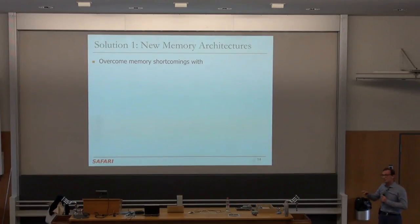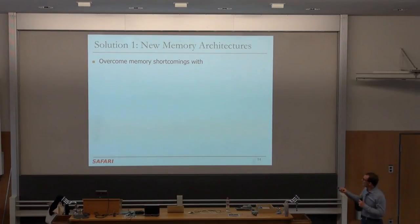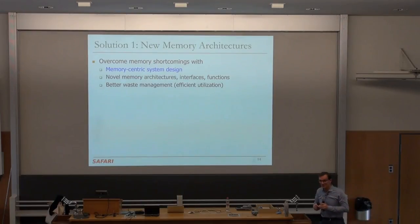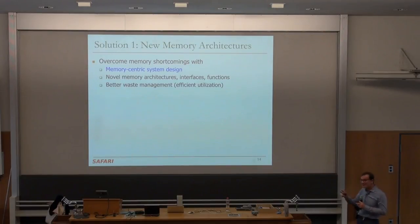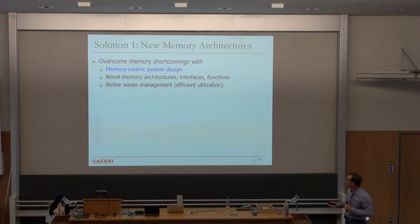Let's take a look at these different solution directions with some broad strokes, and then we'll go into the fundamentals. It's good to have this high-level perspective first before we study the basics. So what is this first solution direction? Basically, this is fixing it — how do we fix the memory? We would like to overcome the memory shortcomings with more memory-centric system design. Today, the systems we're designing are more processor-centric. We would like to look at novel memory architectures, new interfaces, new functions.